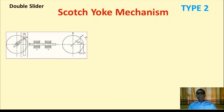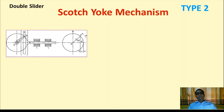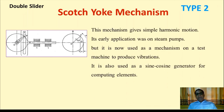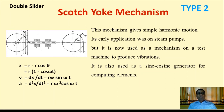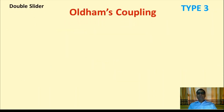The Scotch Yoke mechanism is a very important type showing a direct relation between rotary and linear motion. It gives simple harmonic motion. Its early application was in steam pumps; it is now used in test machines to produce vibration and in sine-cosine generators for computing elements. Here, x = r(1 − cos ωt), velocity v = dx/dt = rω sin(ωt), and acceleration a = d²x/dt² = rω² cos(ωt).